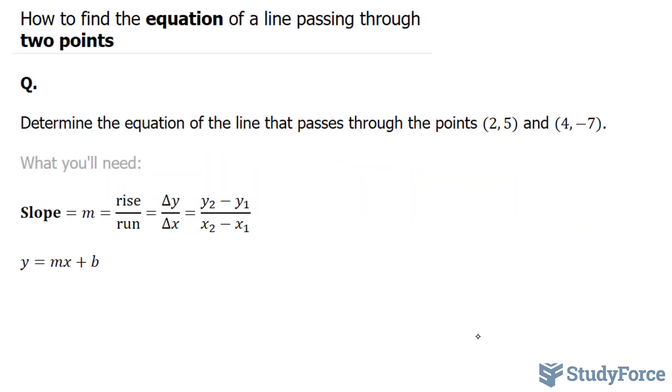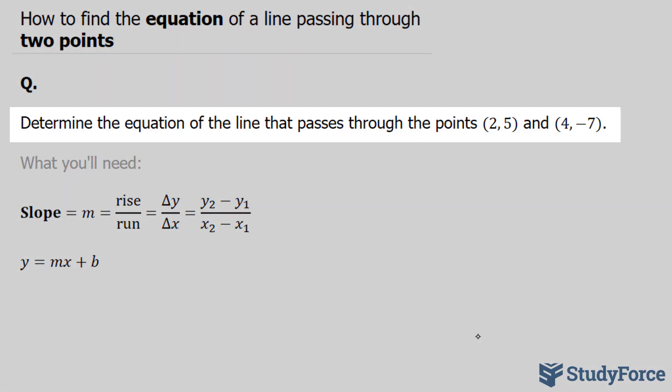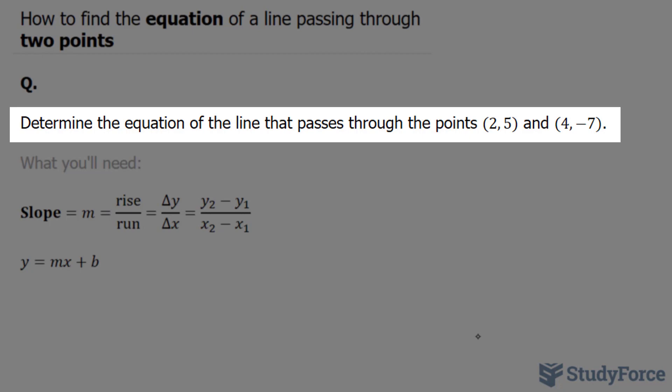In this quick video, I'll show you how to find the equation of a line passing through two points. The question reads: determine the equation of the line that passes through the points (2, 5) and (4, -7).